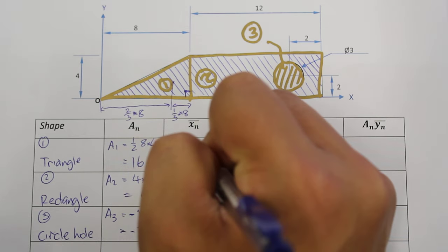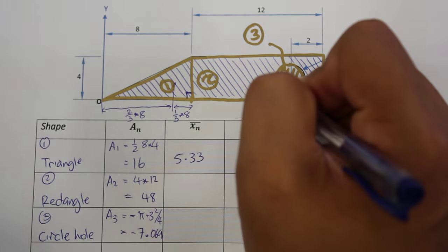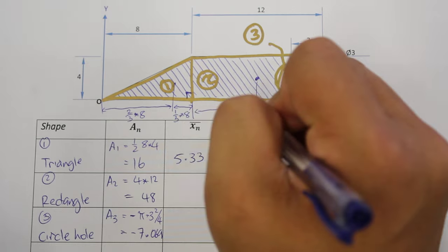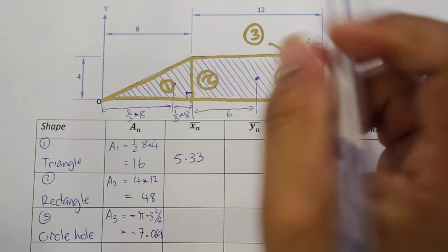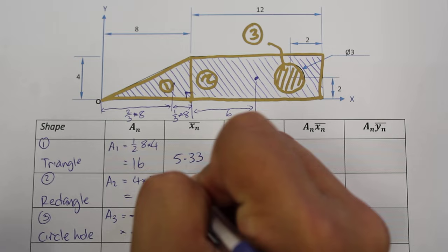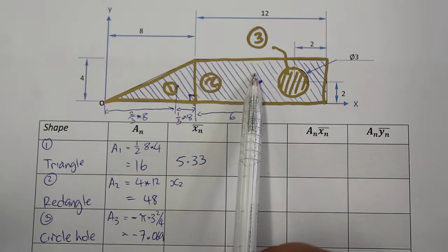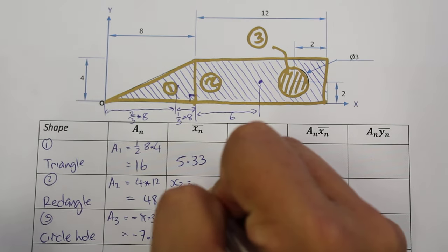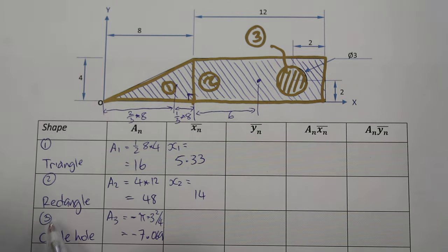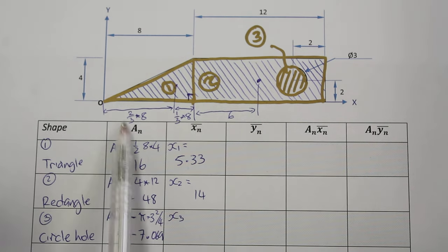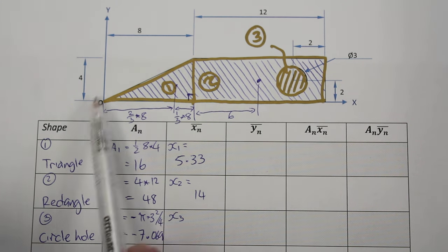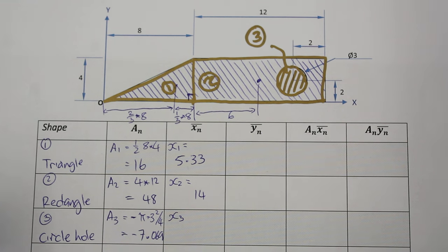For the rectangle, the centroid is in the middle of the twelve-unit width, so that distance is twelve divided by two, which is six. The distance to the centroid of shape number two, x̄₂, is eight plus six, equal to fourteen. For shape number three, the circle, x̄₃ is eight plus twelve minus two, giving us eighteen — that gets us to the middle of that circle.